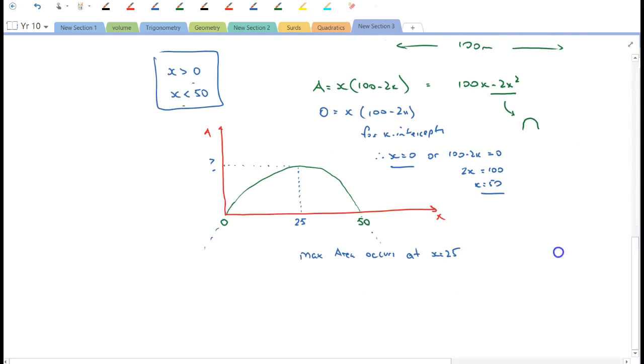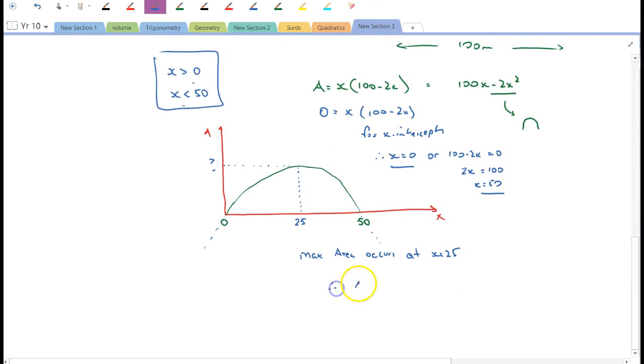Okay, so therefore area equals 25 by 100 minus 2 times 25, which is 25 times 100 minus 50, which is 50, and that's 1250 square meters. So that value there is 1250. All right, and this turning point is the point 25, 1250. So that's my maximum area.